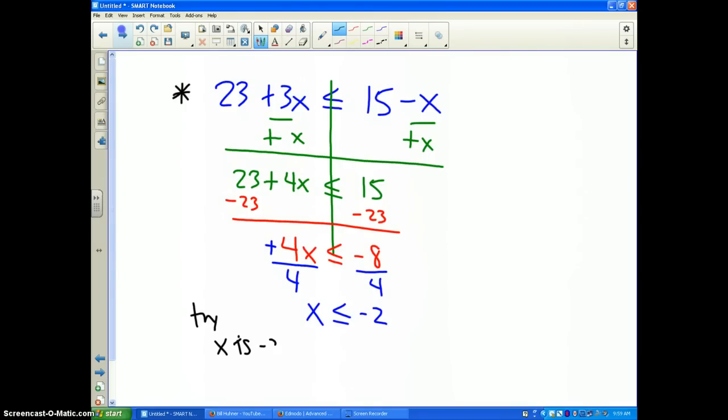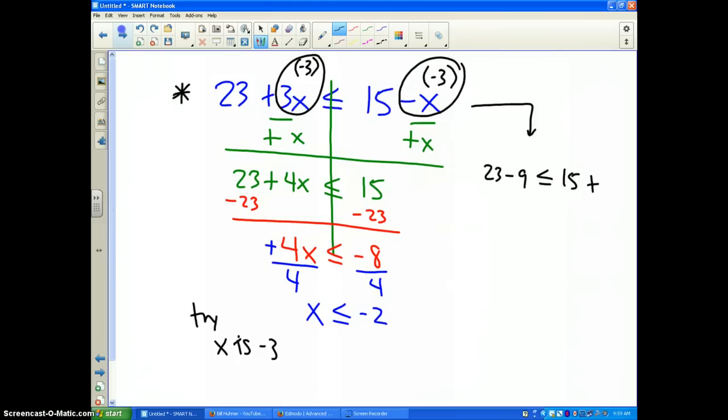I should be able to pick a number that is less than negative 2 and have this original problem work out. Let's try x is negative 3. If I put negative 3 in where the x's are, we get 23 and then negative 3 times positive 3 is negative 9, and that should be less than or equal to 15 minus a negative 3, which means to add 3. Well, 23 minus 9 is 14, and that's less than or equal to 18. It checks and it works out.